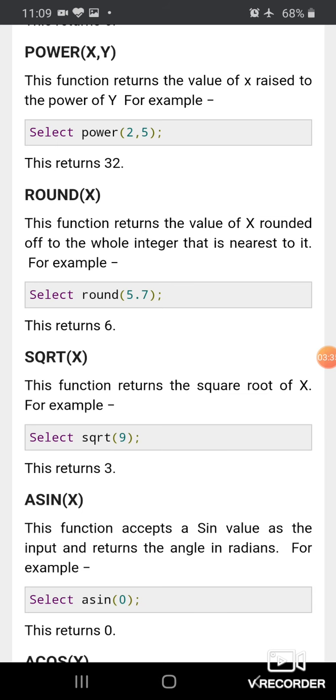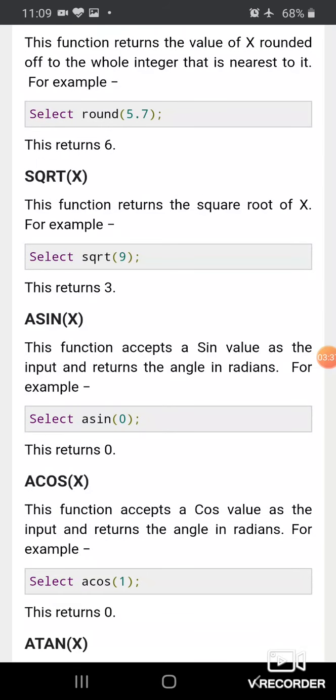ASIN(X) - this function accepts a sine value as input and returns the angle in radians. For example, SELECT ASIN(0) returns the angle.